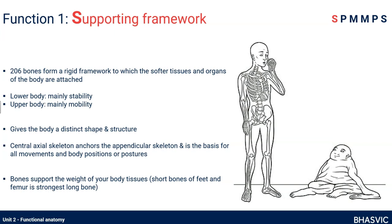The first function is a supporting framework. Without our skeletal system, we would be a blobby mess of tissue and organs. Our skeleton provides a rigid framework and structure that gives us stability and shape, within which our internal organs are suspended. We've got the axial skeleton — this central axis — and the appendicular skeleton, our limbs that attach to it. Essentially, this is the supporting framework to which all other tissues either attach or are contained within.